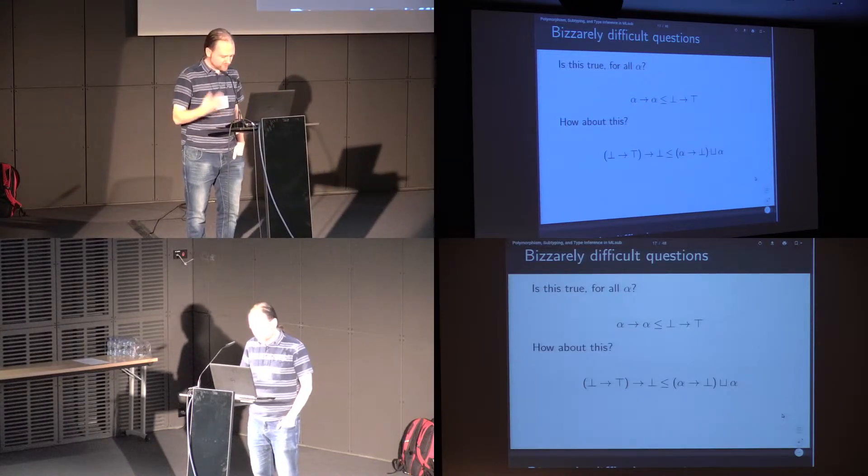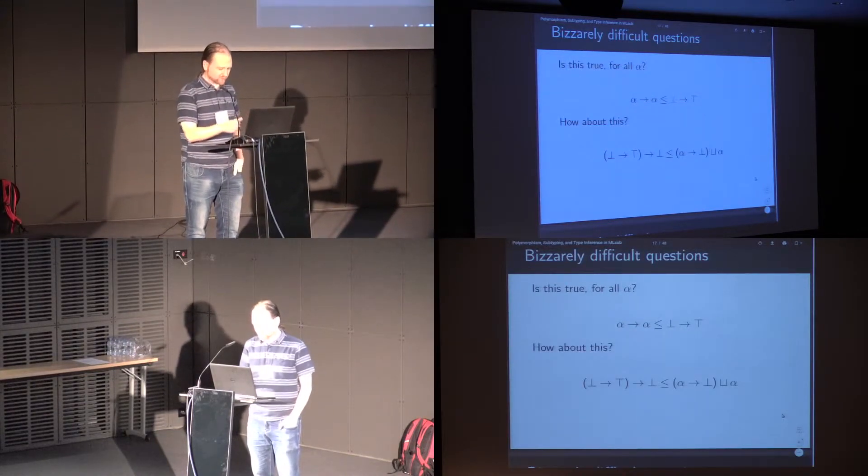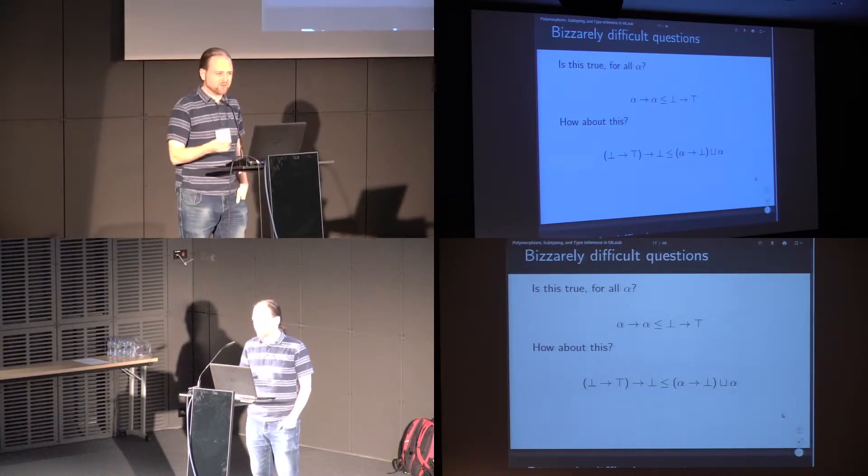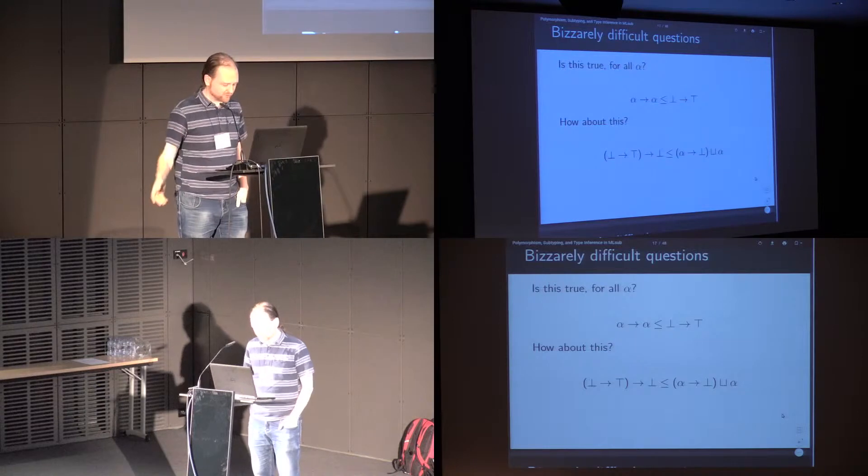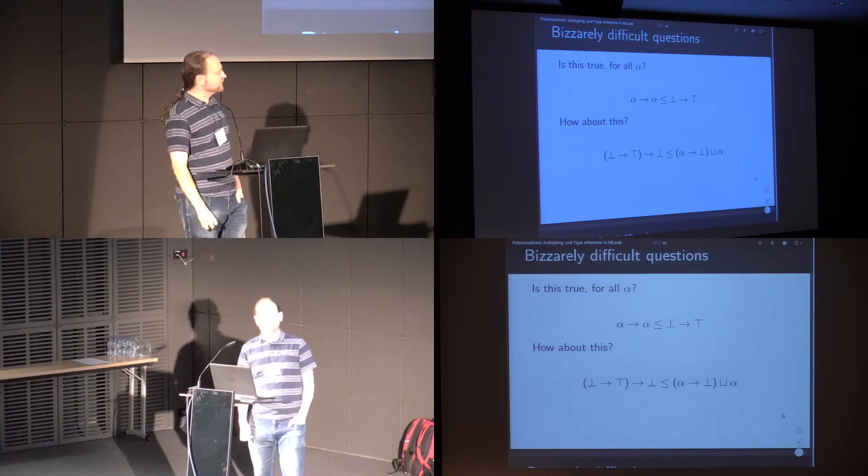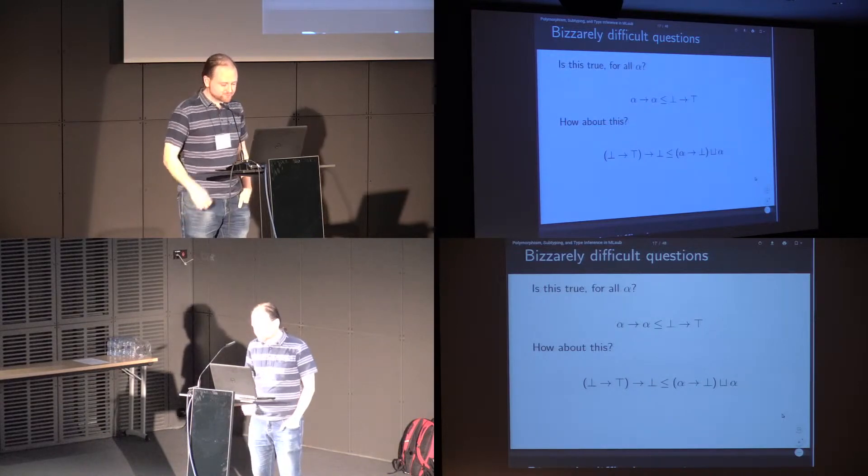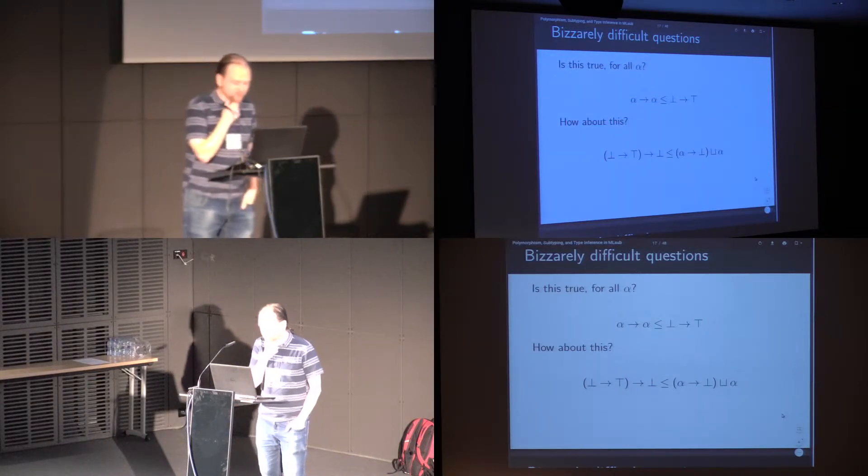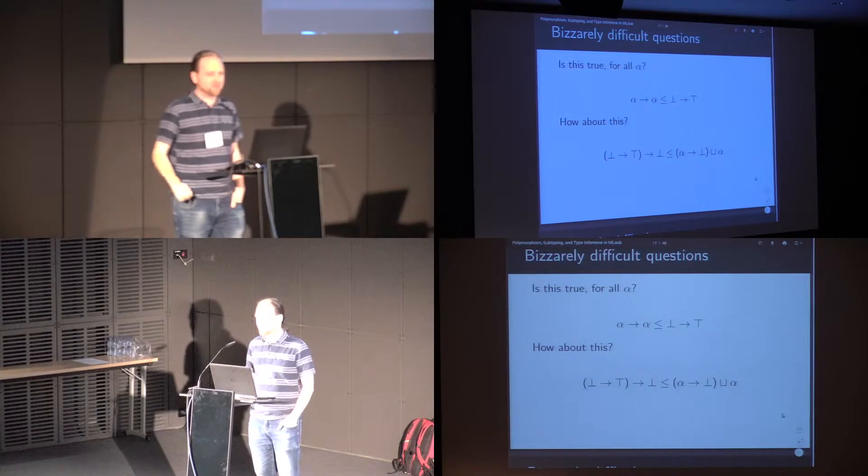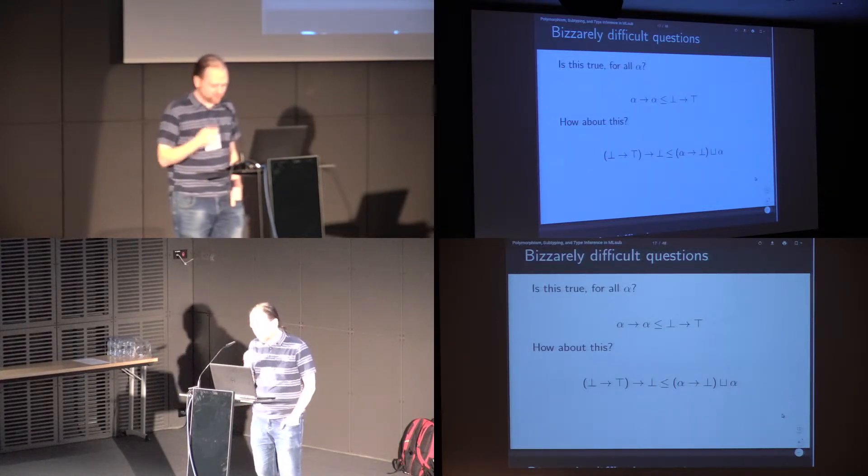But when we move to using the lattice operators, we get questions that are not significantly longer but are stunningly difficult. I took this example from François Pottier's PhD thesis, but there are various others in papers over the years. This is very non-obviously true. To show that it's true, you can do case analysis on alpha. If alpha is top, then the inside becomes top, and otherwise alpha is smaller than the biggest function type, and you can spend a few lines, work this out, and it comes out as true.